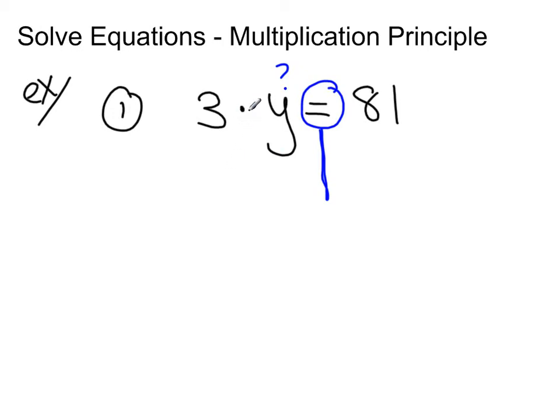So I want to undo this 3 times the y. Well, the opposite of multiplying is dividing. So what I do to one side, I have to do to the other. Now, 3 divided by 3. Well, think what times 3 gets me 3? 1. Well, 3 divided by 3 is 1. And 1 times anything is still the same thing. So I'm left with y. I've undone the math, so to speak. And now I have y just by itself. And 81 divided by 3.